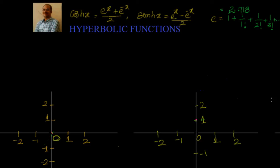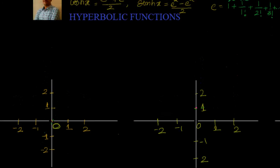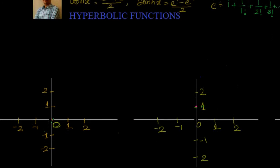Hi, welcome, hearty welcome to you. In the last session we started hyperbolic functions and briefly looked at them. We observed that hyperbolic cos of x is given by e^x plus e^(-x) divided by 2, and hyperbolic sine of x is given by e^x minus e^(-x) divided by 2. In this session we will look into the graphs of sine, cos, and tan hyperbolic functions and understand their domain and range.